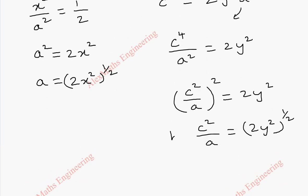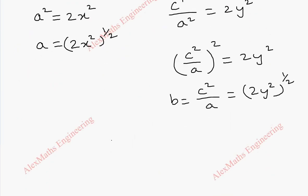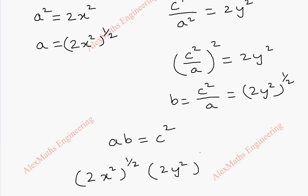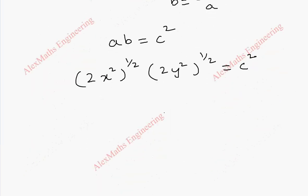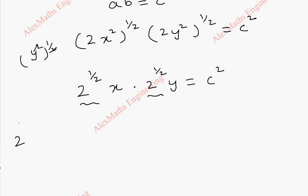Now we have both a and b. Substituting into the relation ab equal to c square: 2x square whole power 1 by 2 times 2y square whole power 1 by 2 equal to c square. Separating powers, 2 power 1 by 2 times x and 2 power 1 by 2 times y equal to c square. Adding the powers of 2: 2 power 1 by 2 plus 1 by 2 equals 2 power 1, which is 2 itself. So 2xy equal to c square. This is our required equation of the envelope.